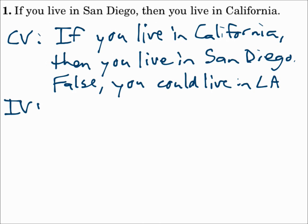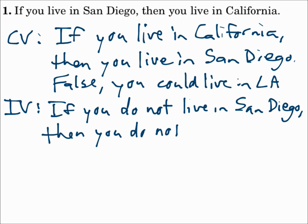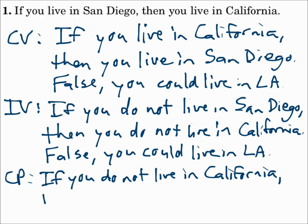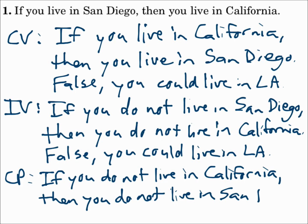For the inverse (IV), put a 'not' in each part of the original statement: if you do not live in San Diego, then you do not live in California. That's false — you could live in LA. For the contrapositive (CP), flip it and put a 'not' in each part: if you do not live in California, then you do not live in San Diego. That's true.